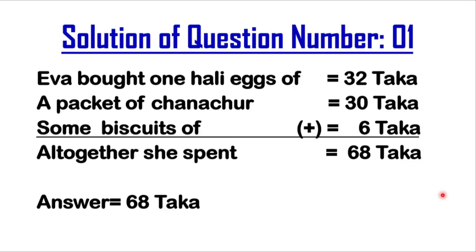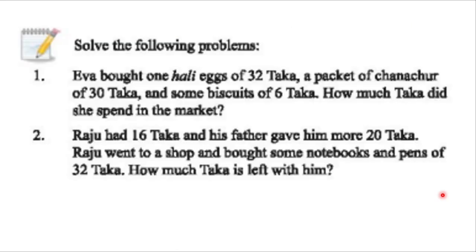I hope you were all able to understand that math. Now we will try to solve question number 2. Let's go back to page number 75 and read the question. Question number 2: Raju had 16 taka and his father gave him 20 more taka. Raju went to a shop and bought some notebooks and pens for 32 taka. How much taka is left with him?